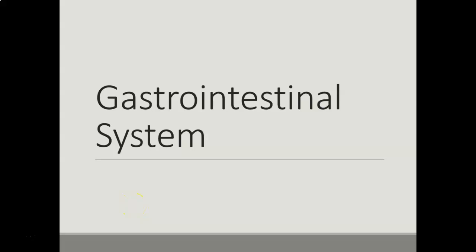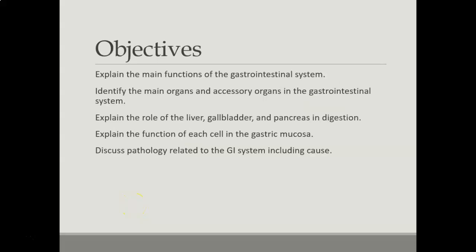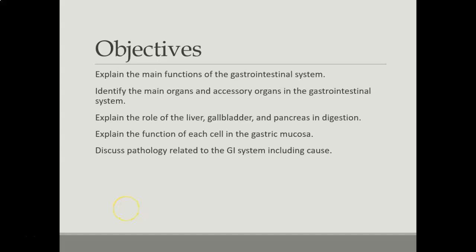So the gastrointestinal system is what we're talking about. The GI tract is basically like a disassembly line, breaking down our food further and further to get the nutrients out of it that we need. The goal is to chew our food super well and get the breakdown started in the mouth with enzymes from our saliva, and then as the food passes through the GI tract, nutrients become available for our bodies to use for fuel.